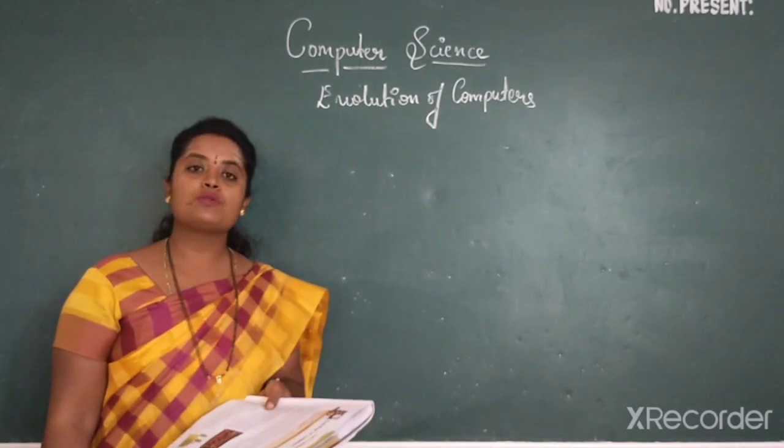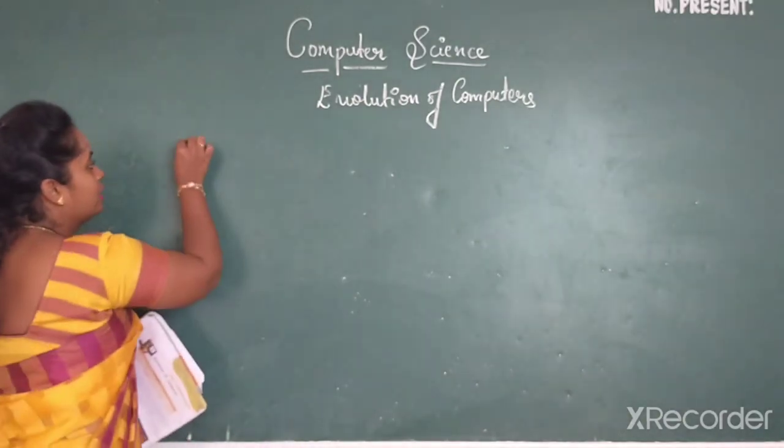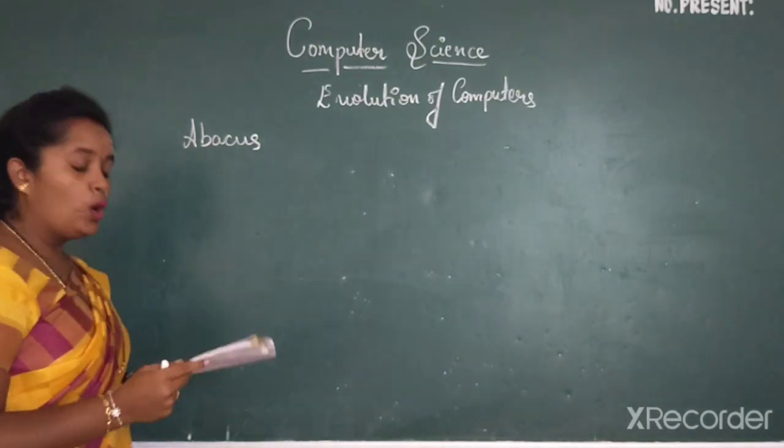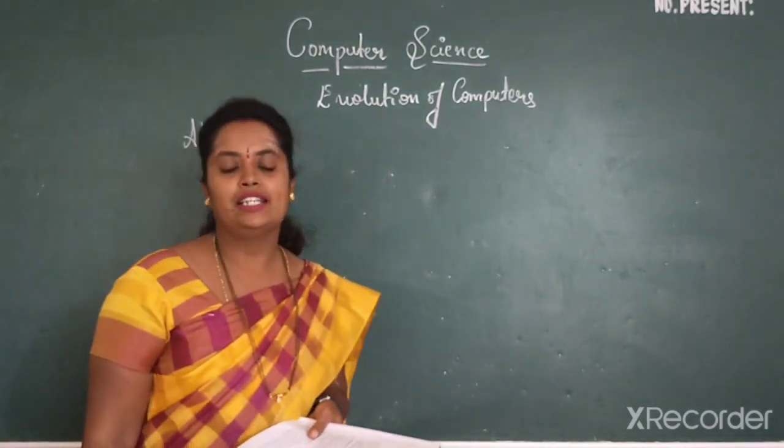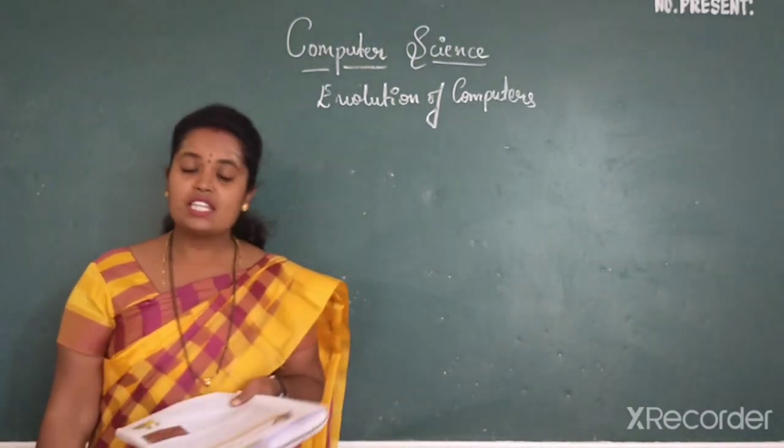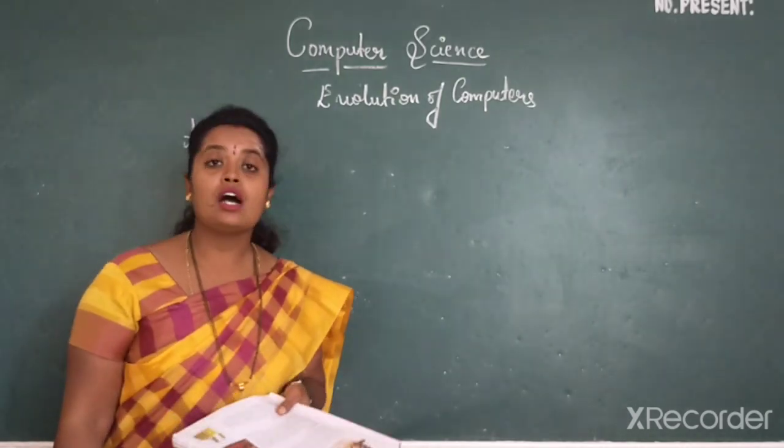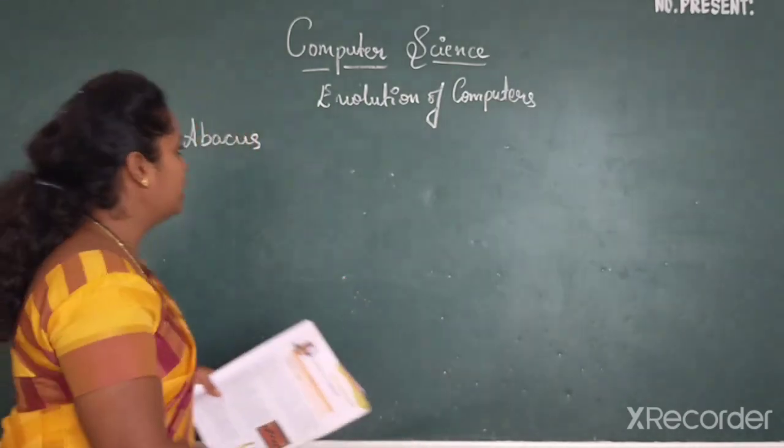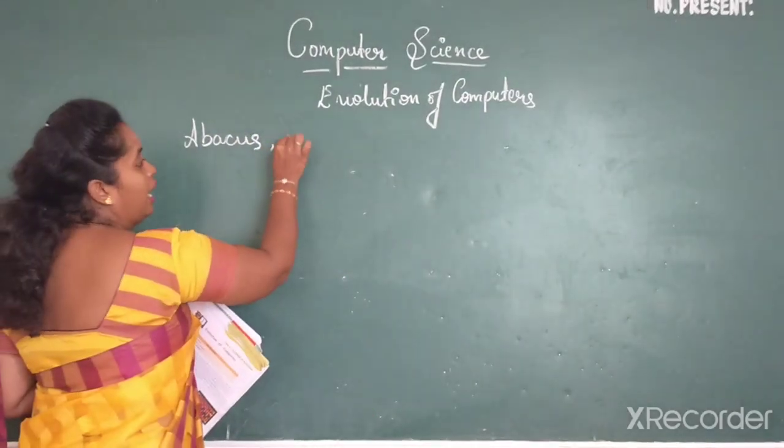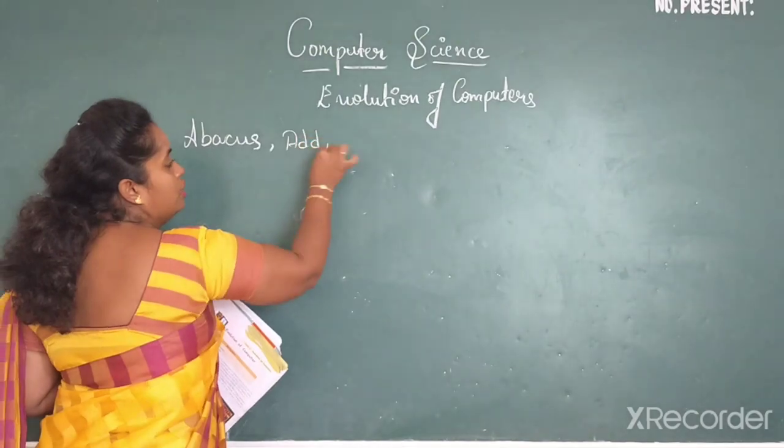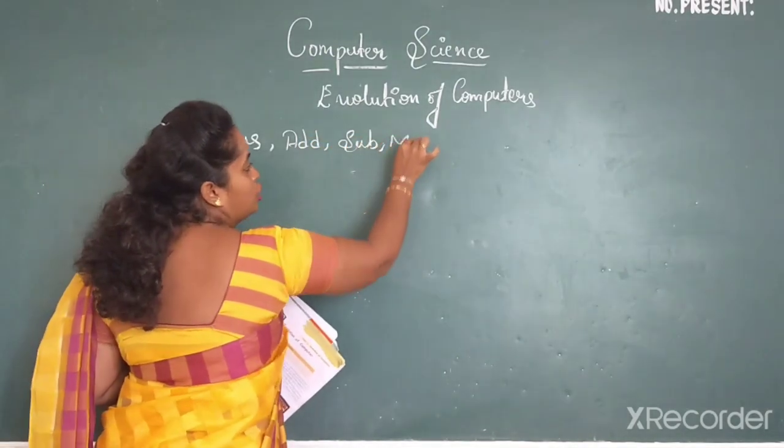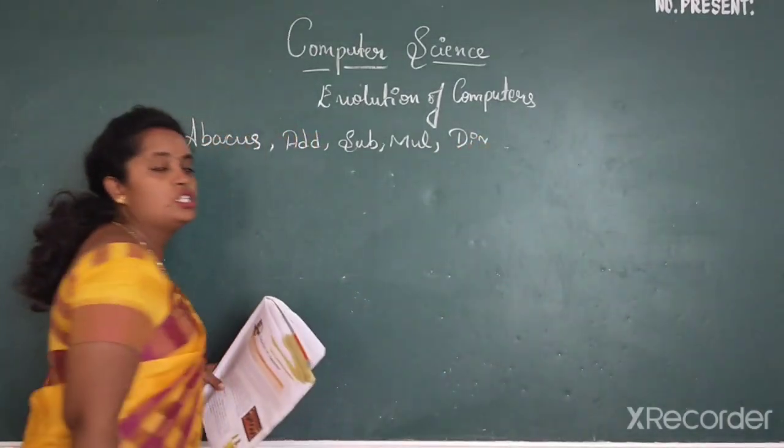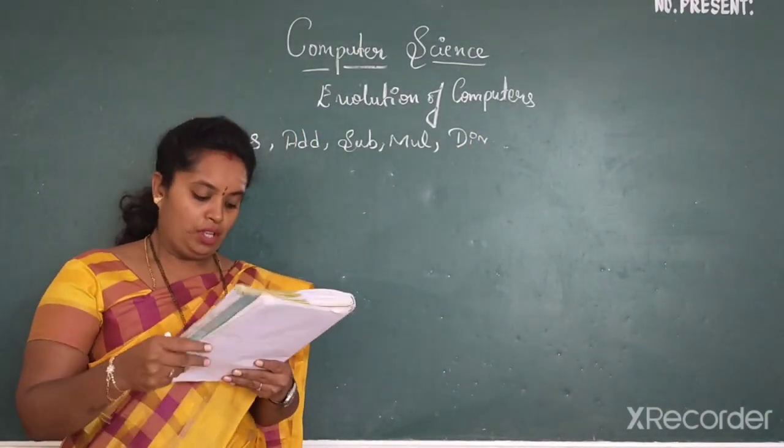In this, the first one is your Abacus. Have you heard the name Abacus? So Abacus was the first calculating device. It was invented by Chinese about 5000 years ago. The calculations like addition, subtraction, multiplication and division, these were the calculations which could be done in Abacus.